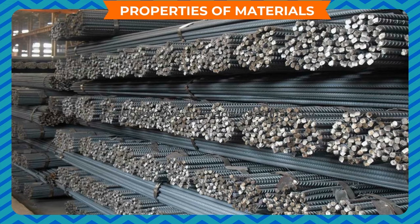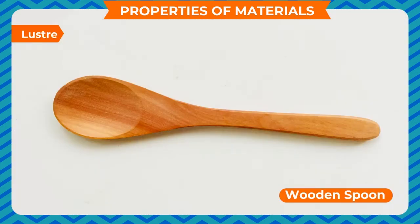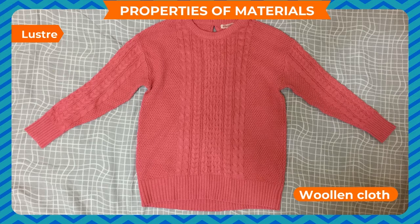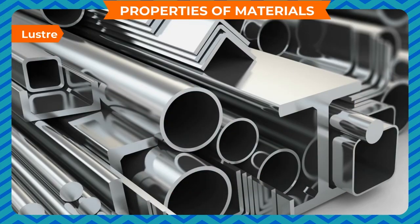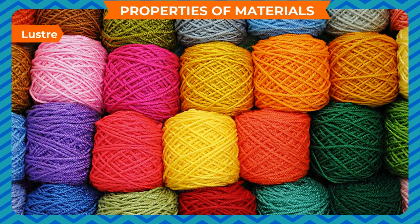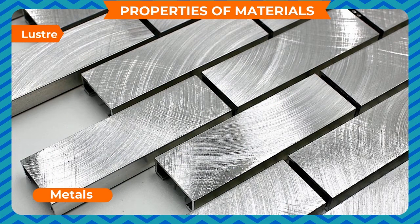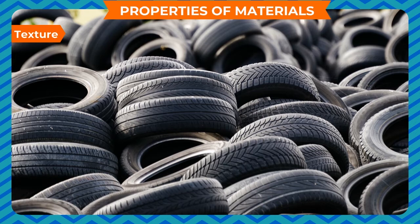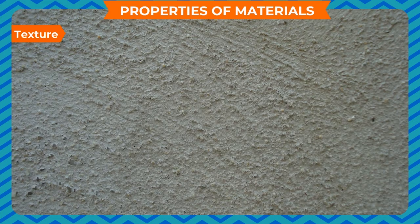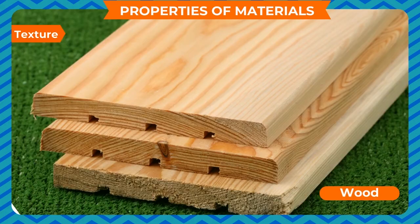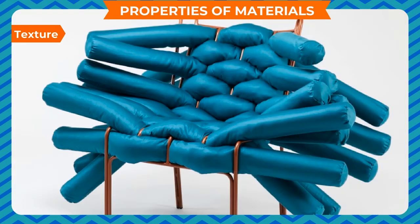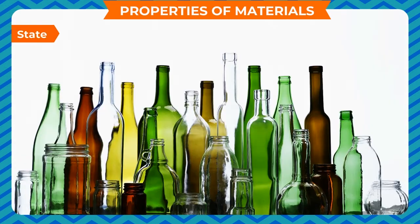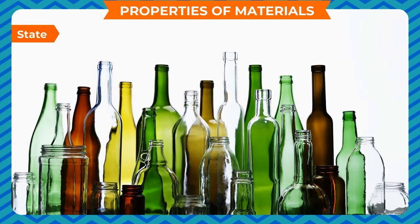Luster: a metal spoon shines whereas a wooden spoon does not shine as much. Silk cloth looks shiny whereas woolen cloth does not. We say that metal has more luster than wood, and silk has more luster than wool. In general, metals are more lustrous than non-metals. Texture: different materials feel different when you touch them. Metals are hard and smooth whereas wood is soft and rough. Soft materials can be compressed or scratched easily, while hard materials are difficult to compress.